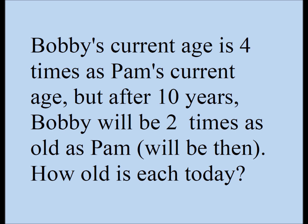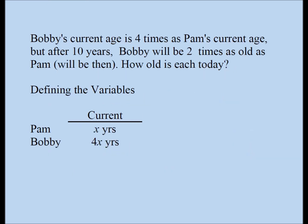Bobby's current age is four times Pam's current age, but after 10 years, Bobby will be two times as old as Pam will be then. How old is each today? It's an algebra problem and we're going to solve it algebraically. In order to solve this problem algebraically, we'll have to define our variables first.